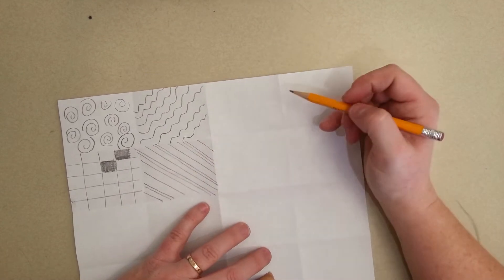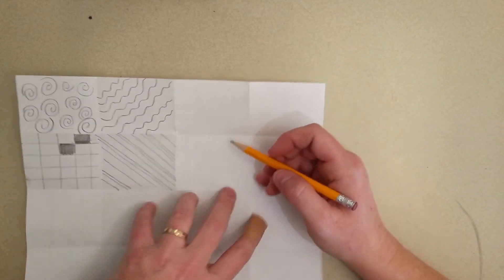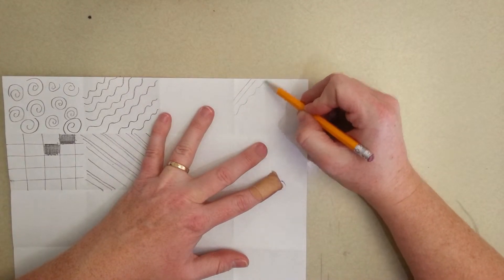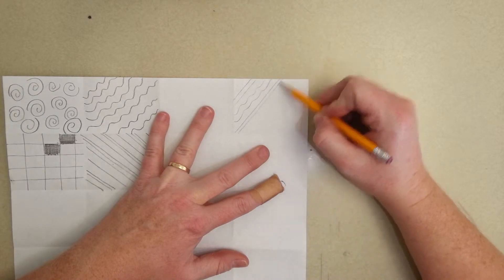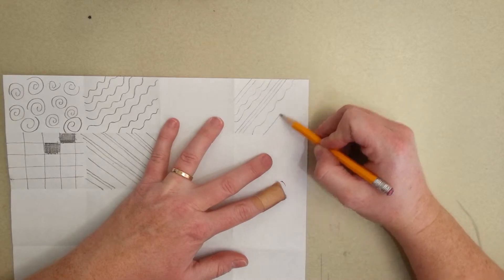You can mix and match, so you could do diagonal lines and then a wavy line and then maybe some thin lines together or narrow lines together and then a wavy and then a wide.